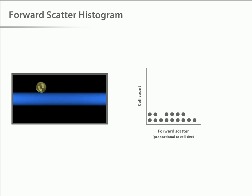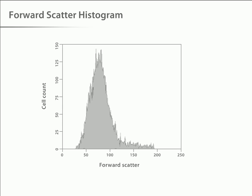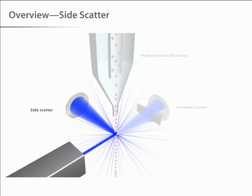A histogram of forward scatter data is a graphical representation of the size distribution within the population, but such a graph only presents one-dimensional data. Next, let's look at side scatter.